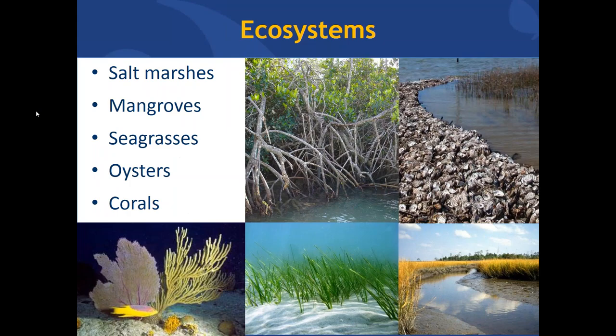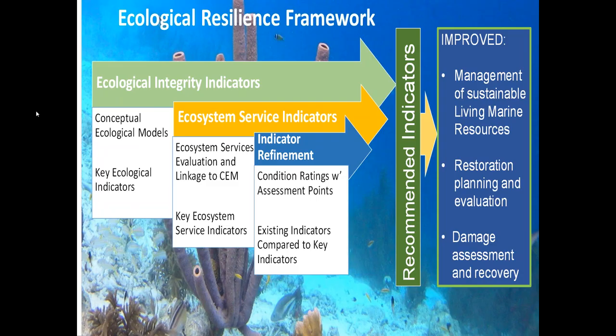Thanks everybody for your time and attending today. I want to talk about a project funded by the NOAA Restore Science Program in 2015 to help them meet the priorities outlined in their science plan. Our goal was to develop a set of ecological integrity indicators, along with ecosystem service indicators for five ecosystems in the Gulf of Mexico, using what we're calling an ecological resilience framework. Our intention was to select indicators that would support management, restoration, damage assessment, and recovery.